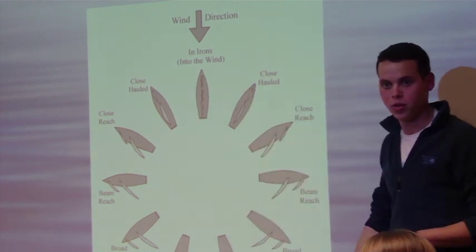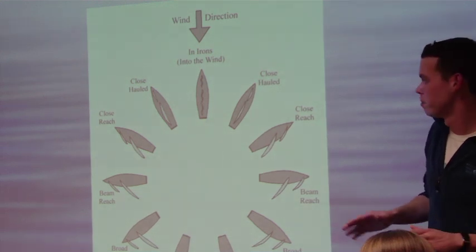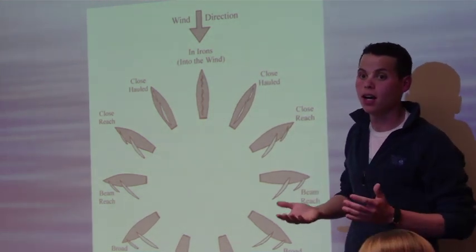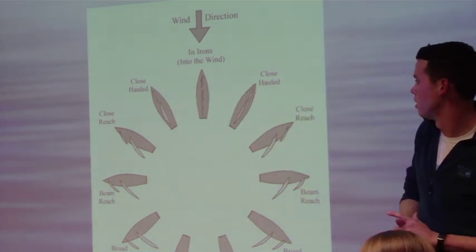As we can see here, see the sails that are flogging, they're going straight back just like a flag. We're not going to be able to move at all in that situation. So what we need to do is we're going to need to what's called bear off or fall off. And so we want to simply just take the boat and turn it away from the wind one side or the other.